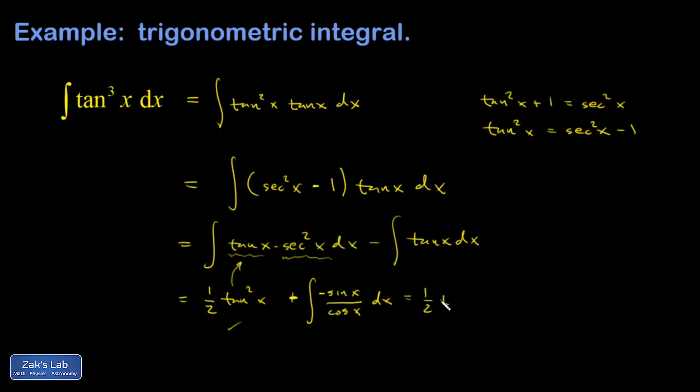And so this is 1 half tangent squared x. It's a natural log absolute value cosine x.